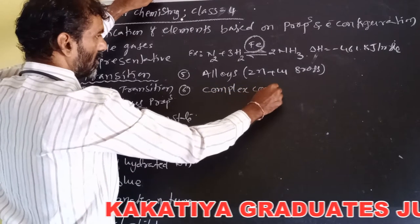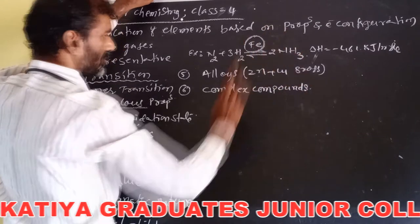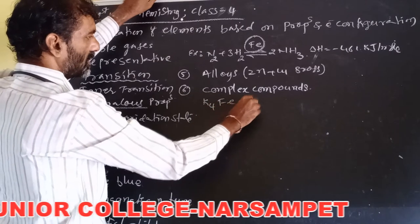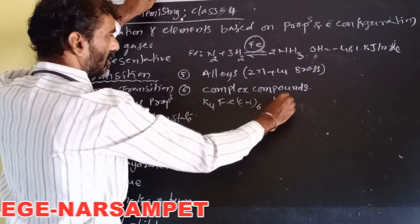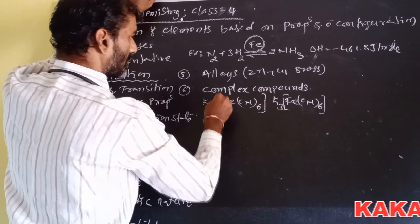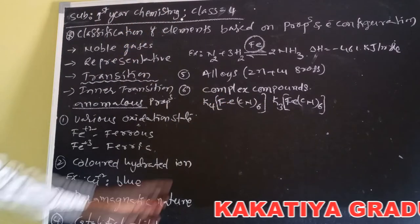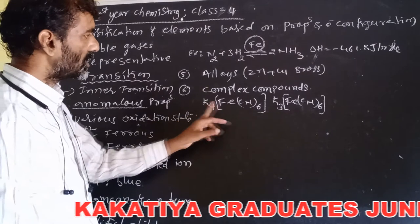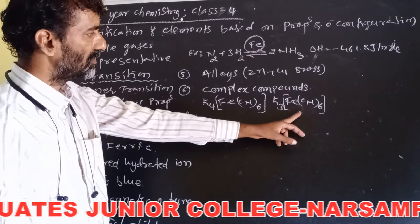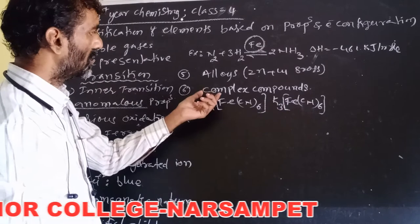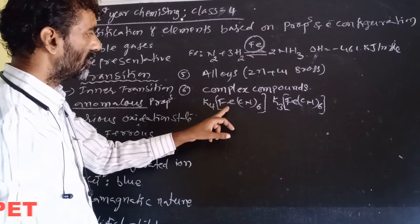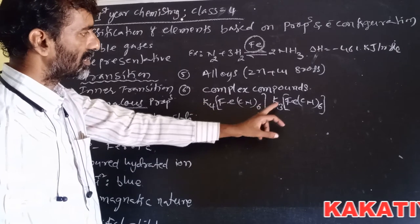Next, transition elements form complex compounds. Examples include K₄[Fe(CN)₆], which is potassium hexacyanoferrate(II), and K₃[Fe(CN)₆], which is potassium hexacyanoferrate(III). So iron forms these complex compounds.